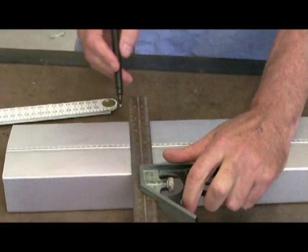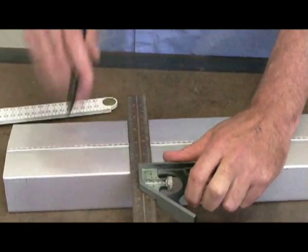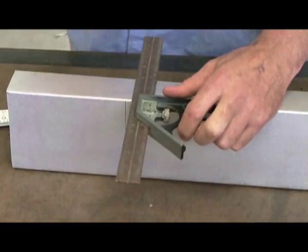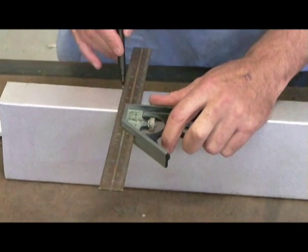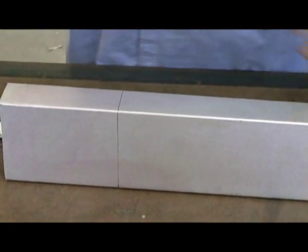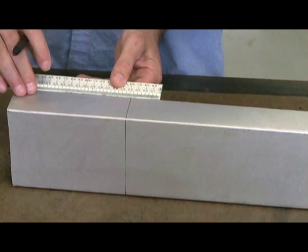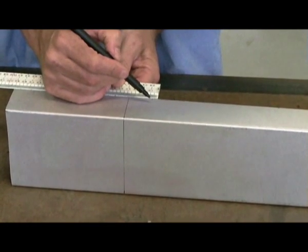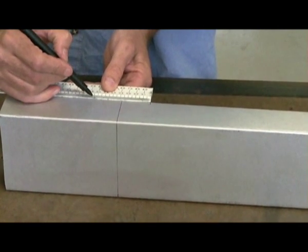Mark a centre line all the way around the downpipe. Using the measurement from the previous video, mark out the material to be cut away.